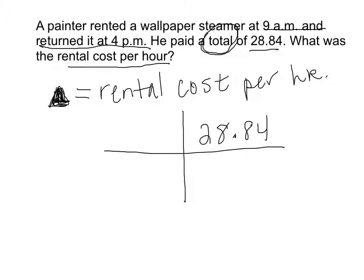On the other side, what do we need to know? We need to know the rental cost per hour — that's our pawn, because we don't know what the cost is. But we do know how many hours he spent, which was between 9 a.m. and 4 p.m., so that's about 7 hours. It's not adding like on the balance beam — we're multiplying. So 7 hours times some cost is equal to $28.84.